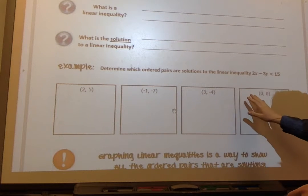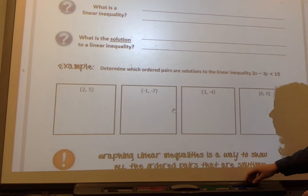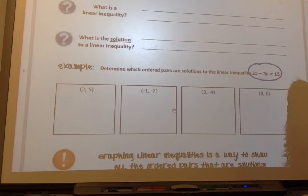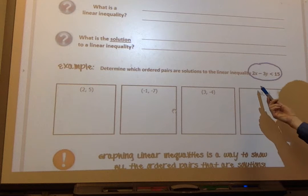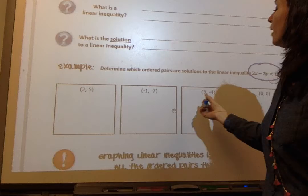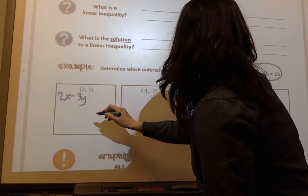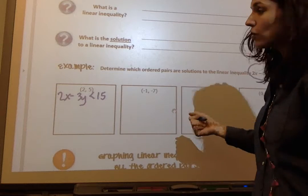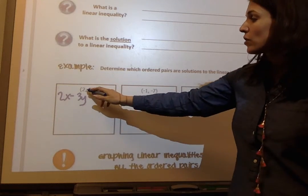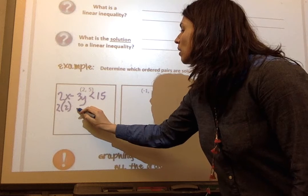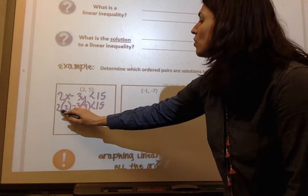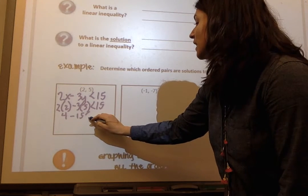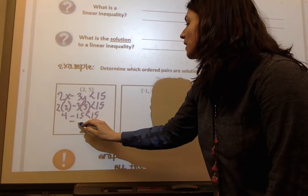We went over in class how we determine ordered pairs as solutions. So if we look at this example, 2x minus 3y is less than 15, I'm just testing points and I'm seeing does (2,5) fit this inequality? To do that, we just plug in numbers. So my original equation is 2x minus 3y is less than 15, my linear inequality, and I'm just going to plug in values. I know that x stands for 2, I know that y stands for 5, and I'm just going to evaluate and check it. So 2 times 2 is 4 minus 15 is less than 15. 4 minus 15 is negative 11.